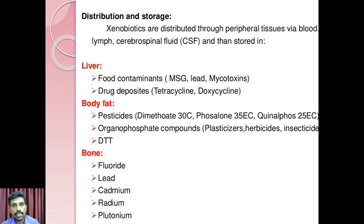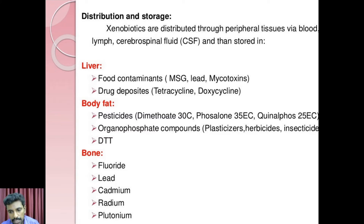Here, we denote the distribution of xenobiotics — how they will be distributed throughout the body. Distribution is actually a rapid process relative to absorption as well as elimination. It is also distributed via peripheral tissues, through blood, lymph nodes, and cerebrospinal fluids. After entering into the bloodstream, a xenobiotic may distribute throughout the body to organs or tissues.